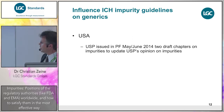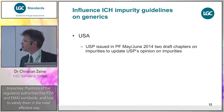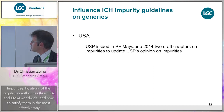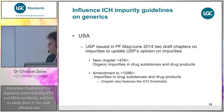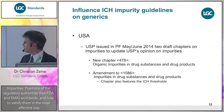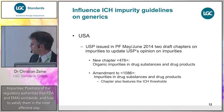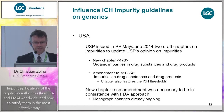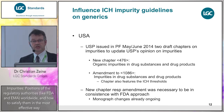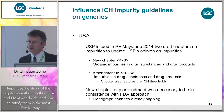Looking at the USA: very recently, in May/June 2014, two draft chapters for impurities were provided by USP. Chapter 476 is a completely new mandatory chapter, and chapter 1086 is an amended one that is also mandatory since it is referred to in chapter 476. Both now feature the ICH thresholds. This amendment was necessary because USP needed to be consistent with the FDA approach, and monograph changes are already ongoing in the USP.